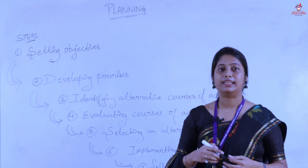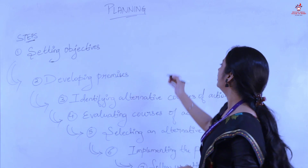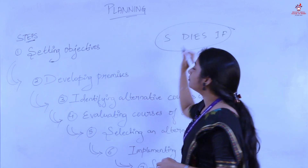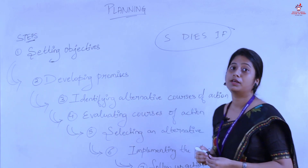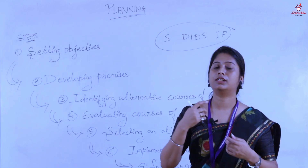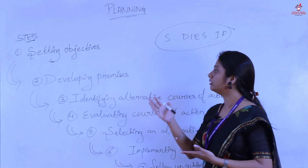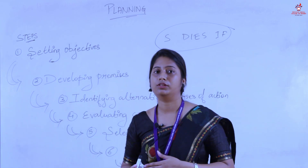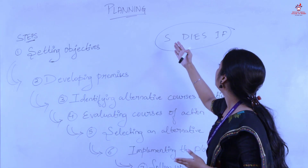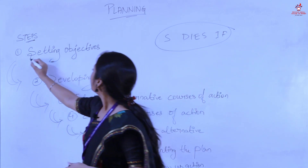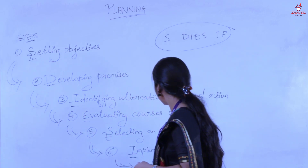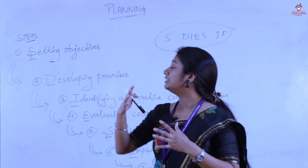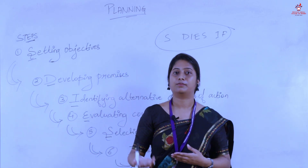These seven steps can be easily memorized with a mnemonic called 'S DIES IF'. Since we can't skip any step in the planning process — skipping a step would cost us marks — it's better to remember them with this mnemonic. S-D-I-E-S-I-F: 'S DIES IF' makes it easy to remember all seven steps of the planning process. Thank you everyone.